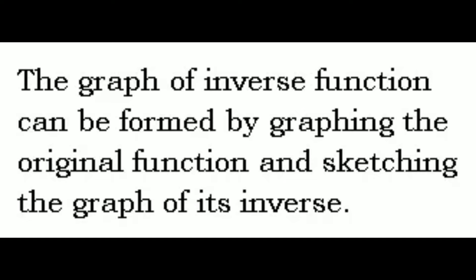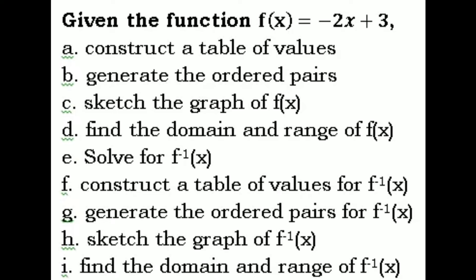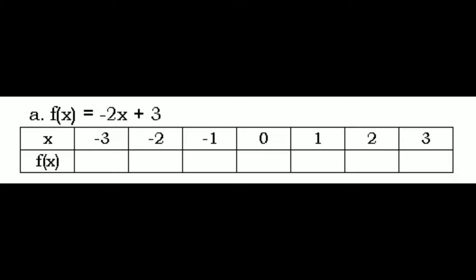We can see that the graph of the inverse function can be formed by graphing the original function and sketching the graph of its inverse. Now we have a task: given the function f(x) = -2x + 3, we will do 9 tasks. Letter A: construct a table of values. In the table, let x be -3, -2, -1, 0, 1, 2, 3. We'll solve for f(x) using f(x) = -2x + 3.